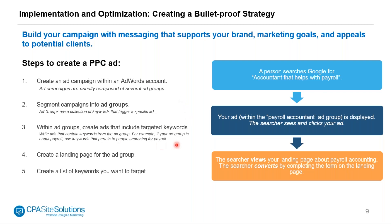Once you have the ad group, you'll create the actual ad copy. What you saw displayed a couple of slides ago — the blue text, then green text labeled 'ad,' then gray text underneath — that is your actual ad that people are going to be shown. You'll want to create that copy and include your targeted keywords.